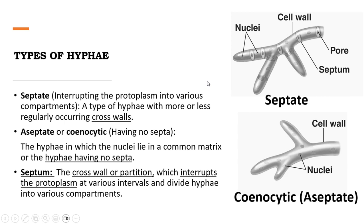Aseptate hyphae do not have cross walls and are not septate. These are also known as syncytic hyphae and they lack septa between compartments. The septum is the cross wall or partition which interrupts the protoplasm at various intervals and divides the hyphae into various compartments.